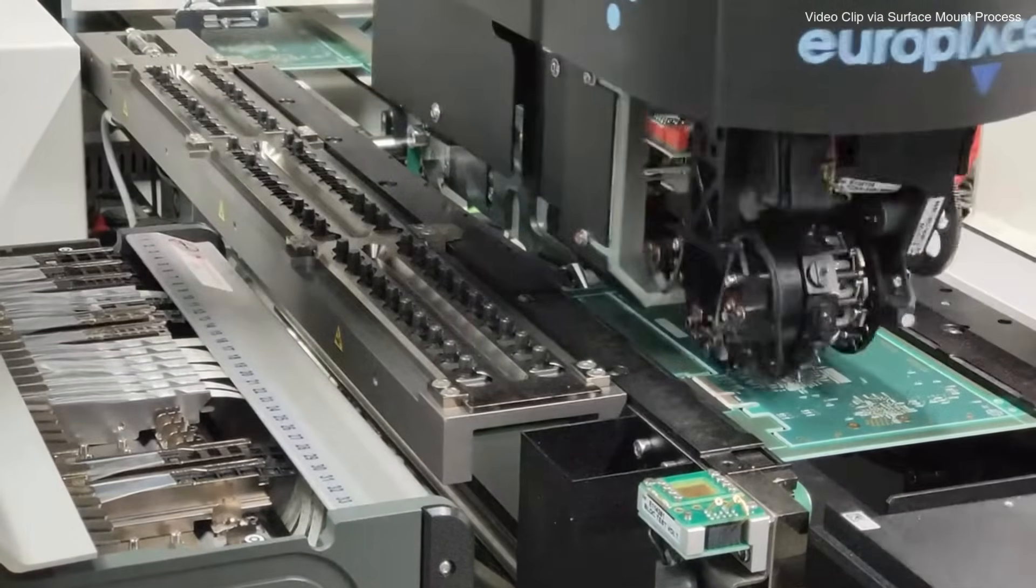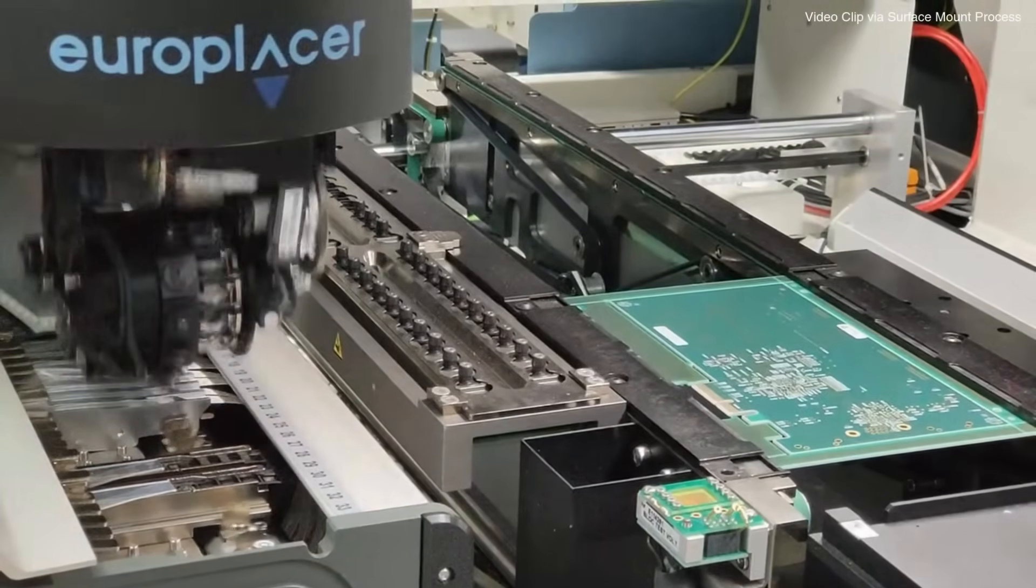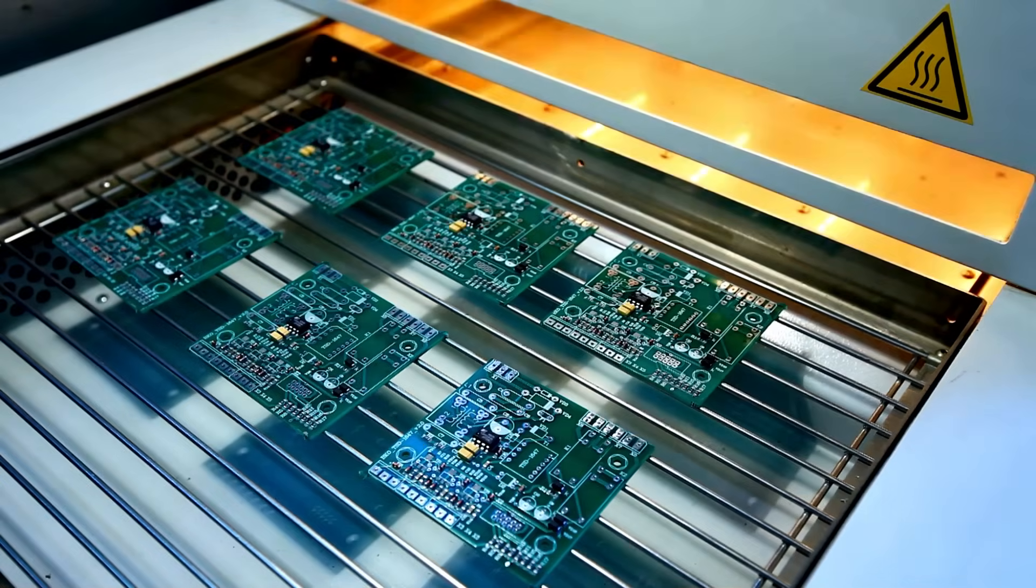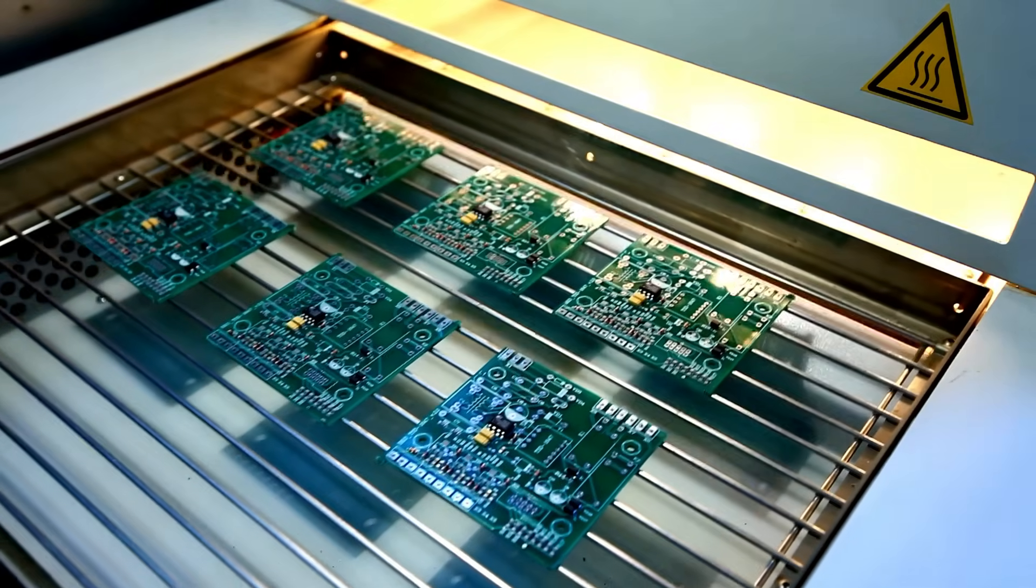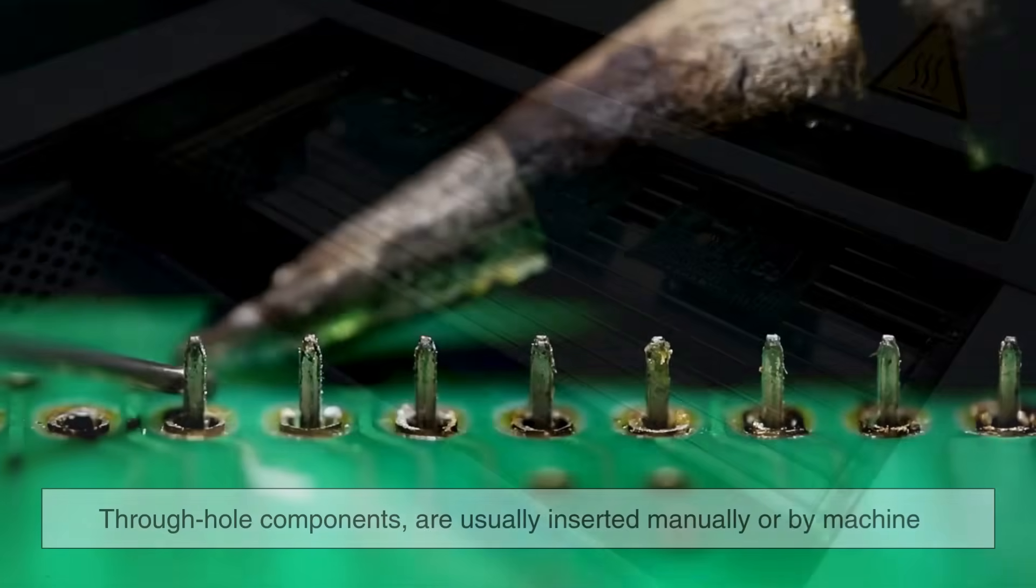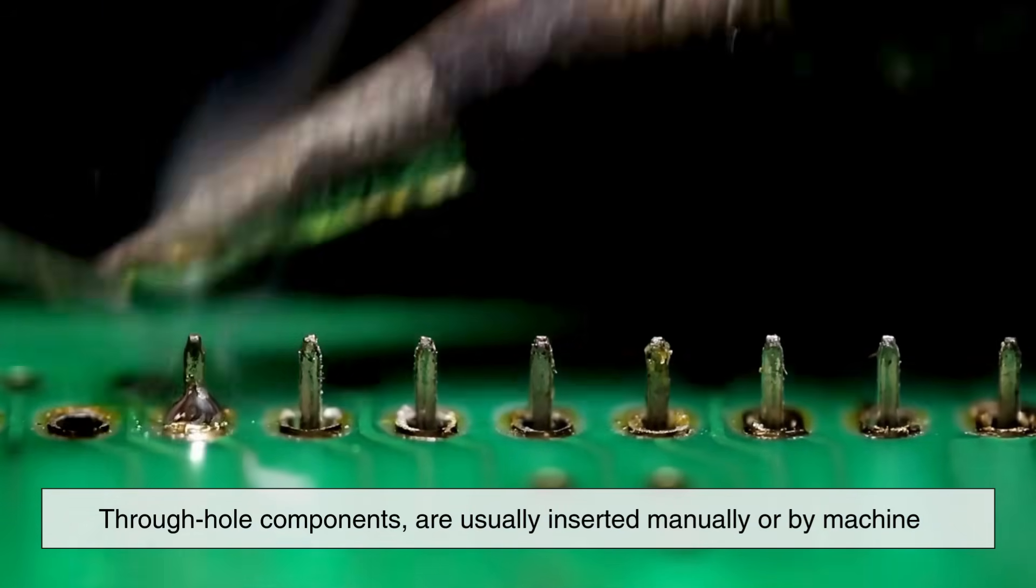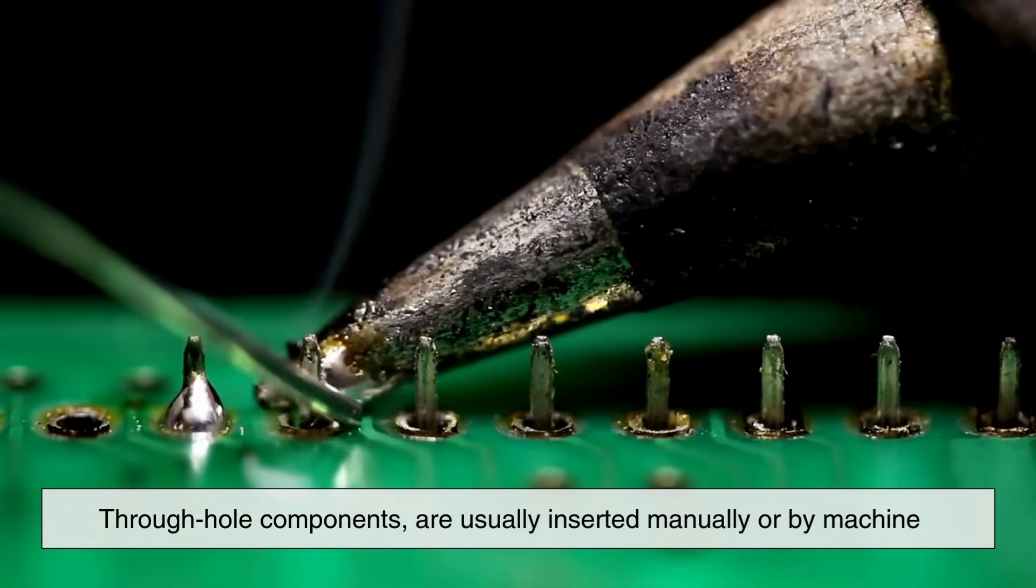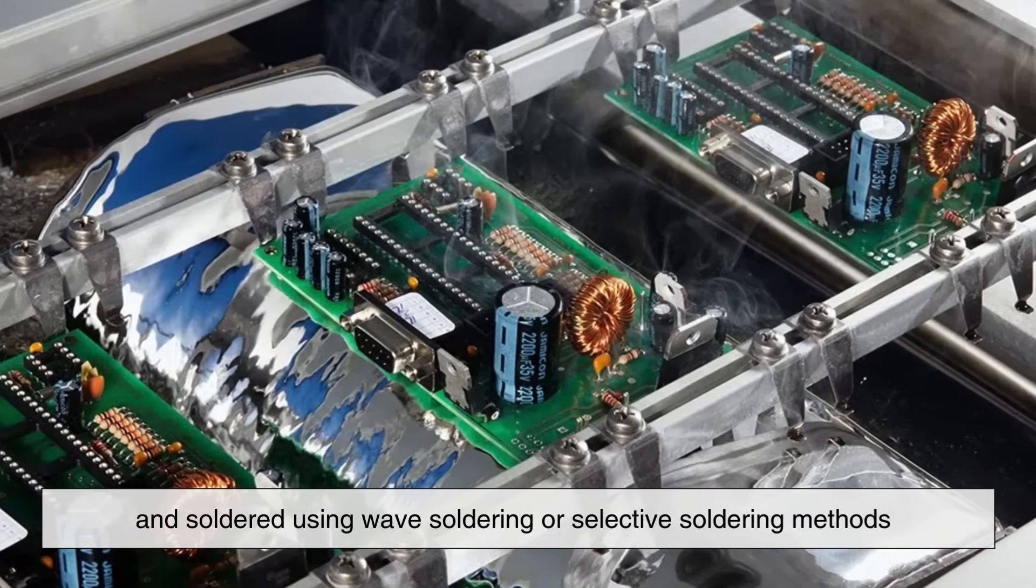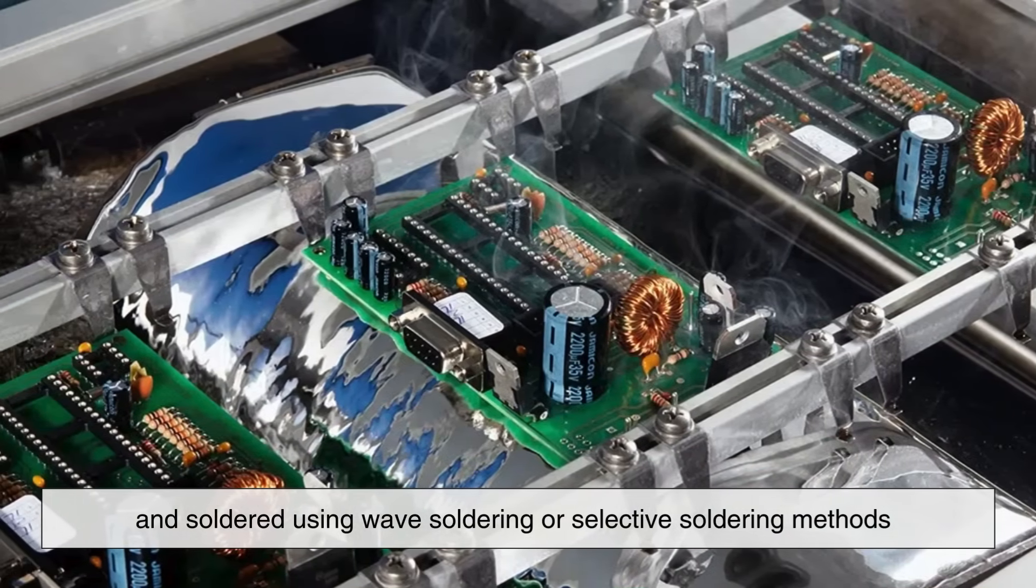Then, pick-and-place machines rapidly place components onto the paste-covered pads. The board is then heated in a reflow oven, melting the solder paste and bonding the components to the board. Through-hole components, if needed, are usually inserted manually or by machine and soldered using wave soldering or selective soldering methods.